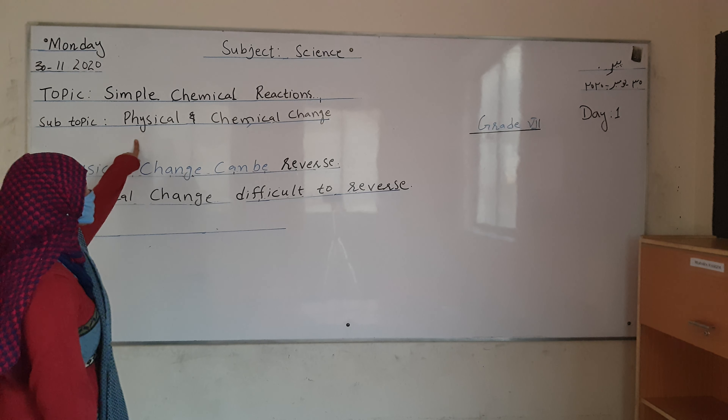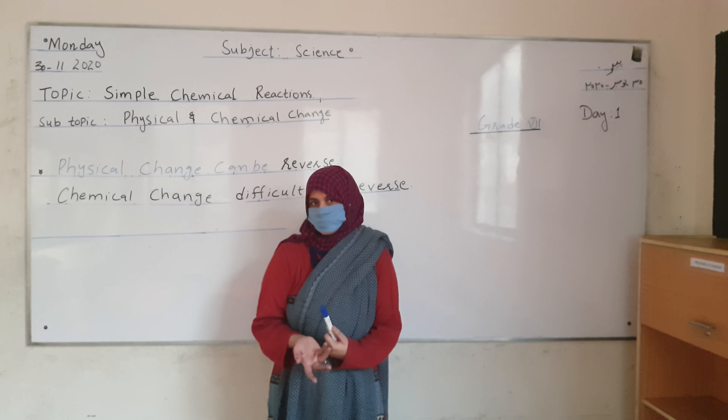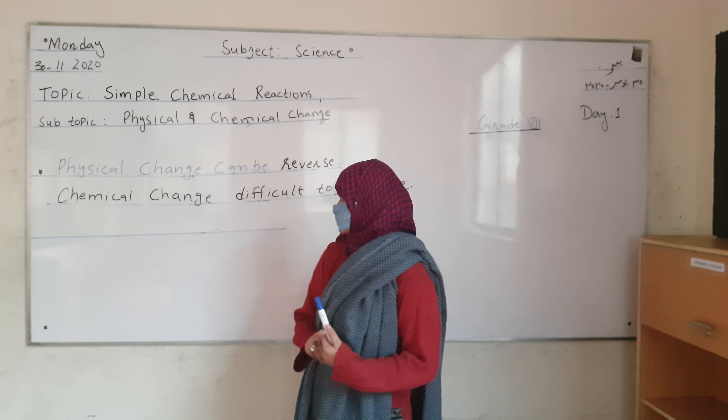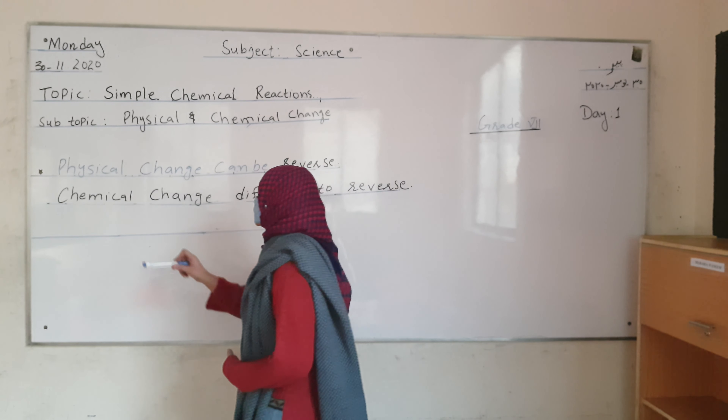In normal routine life, we talk about the physical. Physical means the thing which you can see with your eyes. Chemical is something which you cannot see easily. It is not happening in front of you — it is happening inside the substance.